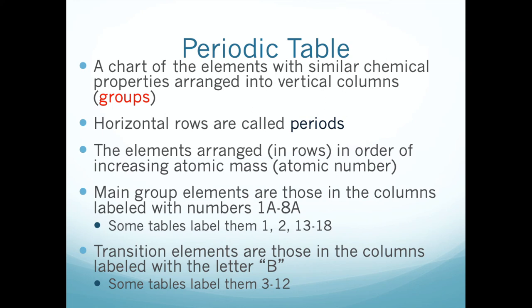These rows, where we have repeating patterns, are called periods — each horizontal row is known as a period. The columns, where all elements in a given column have similar chemical properties, are called groups — sometimes called families, but groups is probably the more common term.